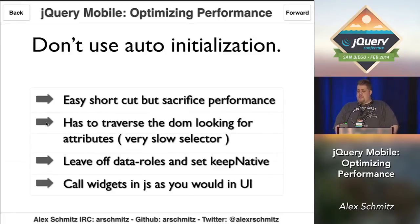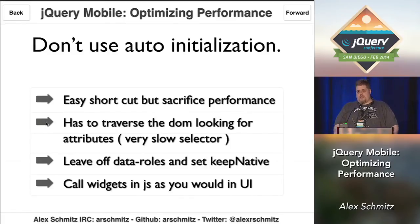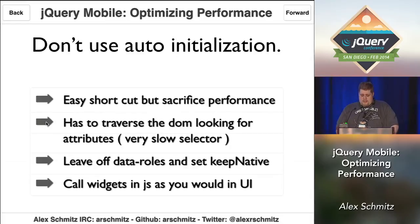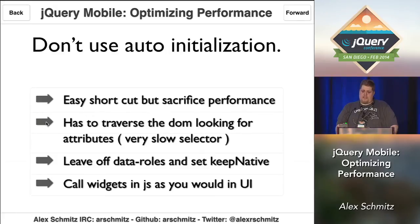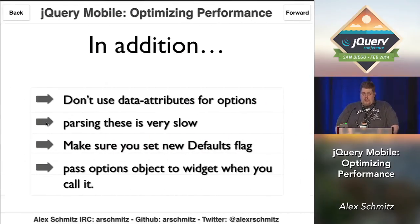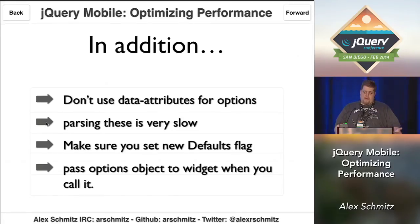Another thing you can do is don't use our auto-initialization. It's a great shortcut when you're prototyping, but with auto-initialization we have to parse the DOM every time looking for all these widgets — and data attribute selectors are really slow, one of the slowest selectors you can have. To avoid this, leave your markup as is but don't add data-roles, and for inputs set your keep-native selector. Then just call your widgets in JavaScript the same way you would with a jQuery UI widget. Don't use data attributes for options either — instead set the defaults flag and pass an options object to the widget.